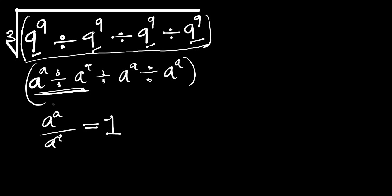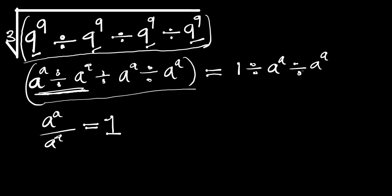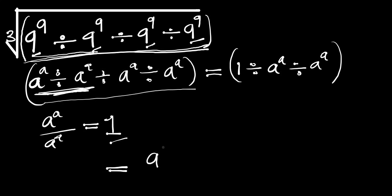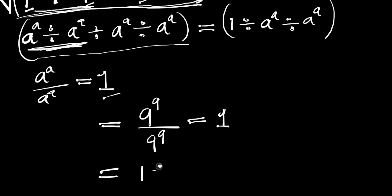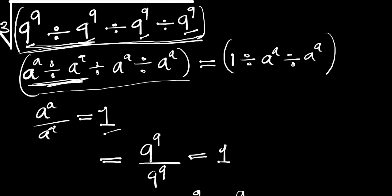So if this equals 1, that means the whole expression becomes 1 divided by a to the power of a, divided by a to the power of a. We have inserted 1 here, and this is the same trick we are going to use. We concentrate on the first two terms: 9 to the power of 9 divided by 9 to the power of 9 gives us 1. So replacing those first two terms by 1 gives us 1 divided by 9 to the power of 9, divided by 9 to the power of 9.